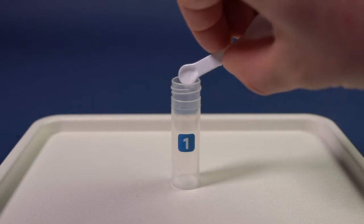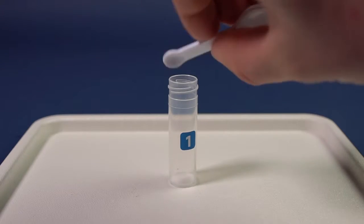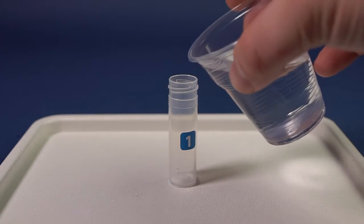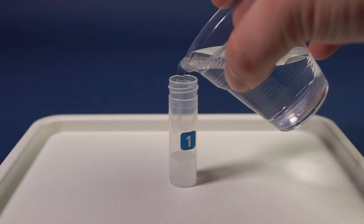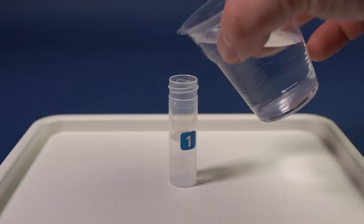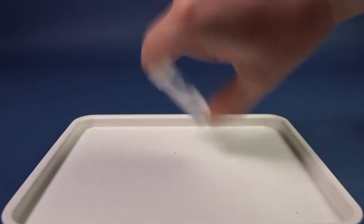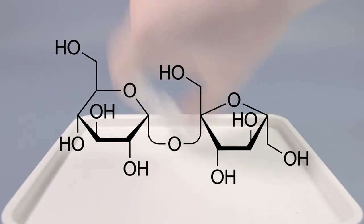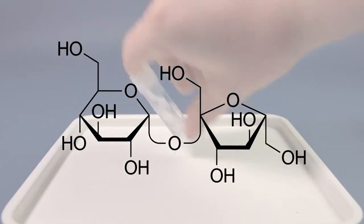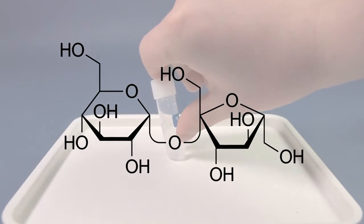Take the two numbered vials, pour some table sugar in the first vial and dissolve it in water. We have made a sucrose solution. Sucrose has a complex molecule which consists of glucose and fructose.